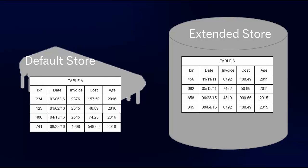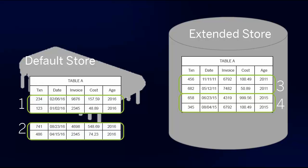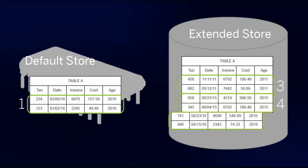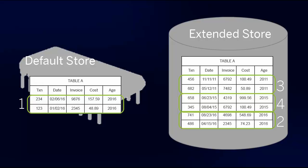Multi-store tables support the concept of aging data. For example, table A contains invoice data — it has two partitions in default store and two in extended store. Within the default store, partition 1 contains all open invoices. As time progresses and the invoices are closed, you move the closed invoices to another partition within default store. They remain in memory for easy access, but eventually you no longer need them in memory. Moving the entire partition to extended store maintains easy access to the data but frees up memory.